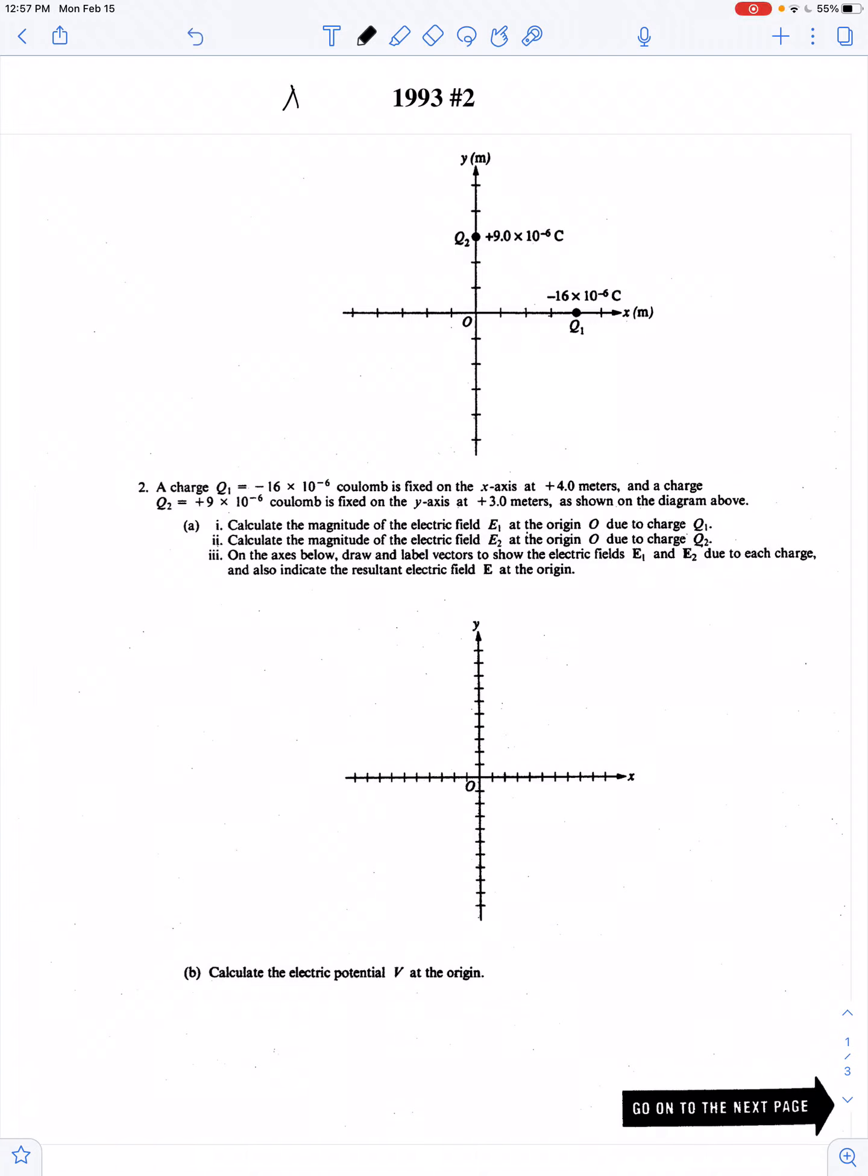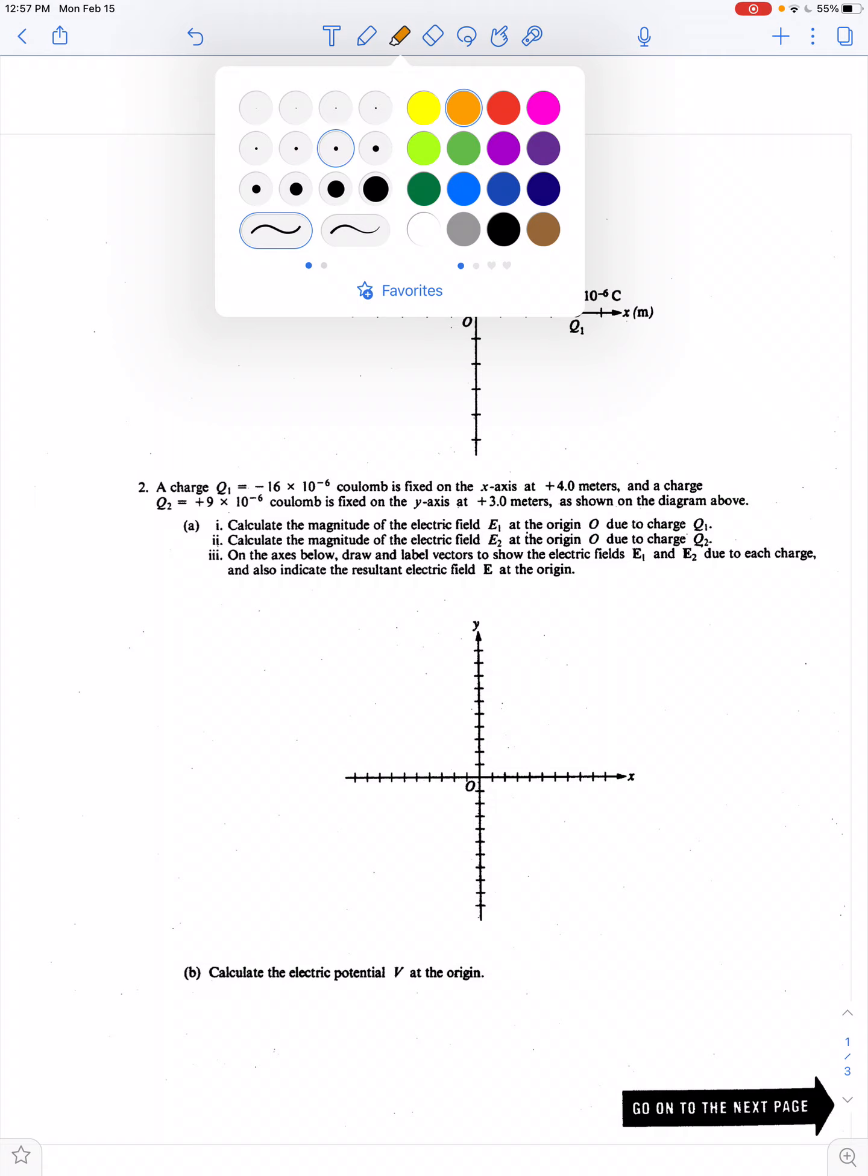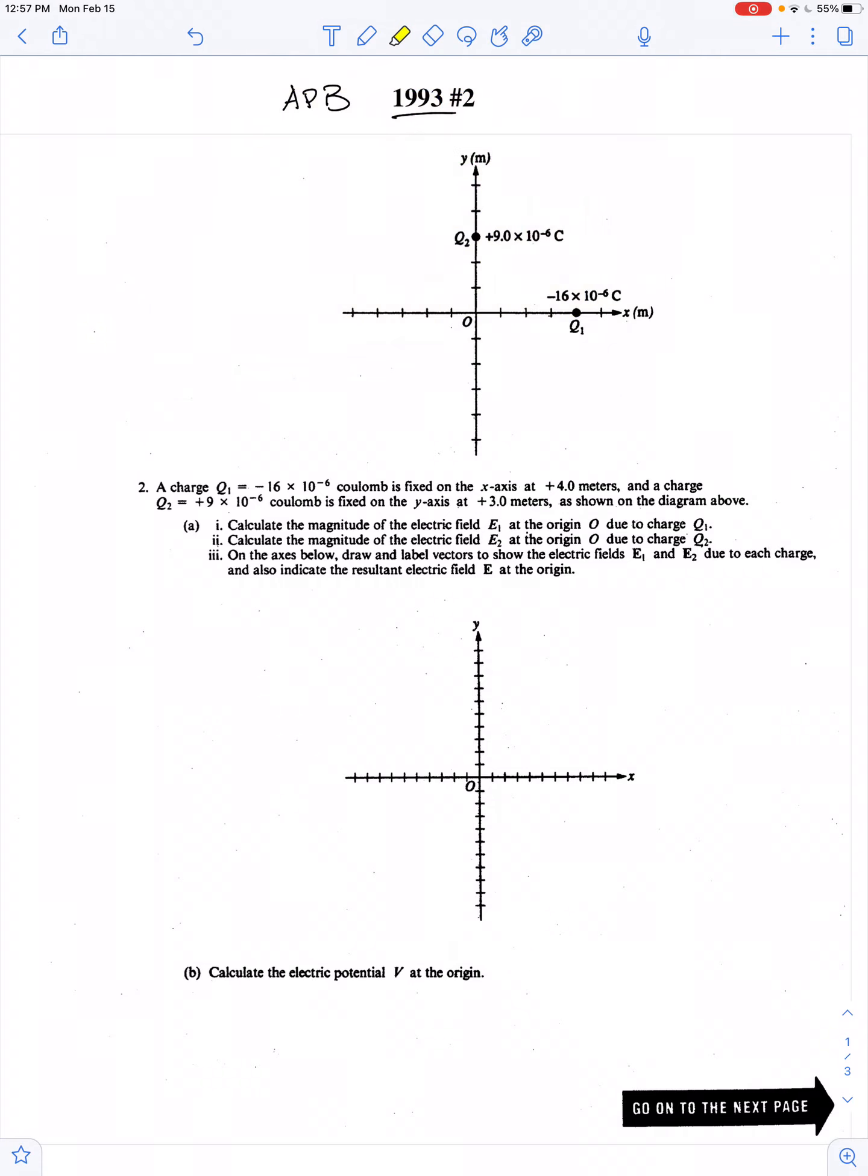This problem was taken from the AP Level B physics exam, from the year 1993, problem number 2. We're told that a charge of negative 16 microcoulombs is located at x equals 4 meters. That's this charge right here. And then we've got a second charge, positive 9 microcoulombs at y equals 3 meters.